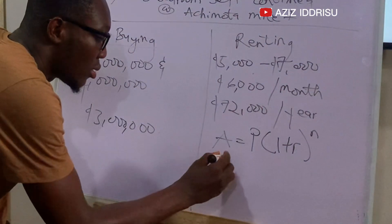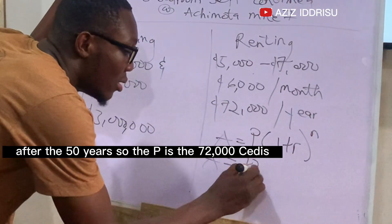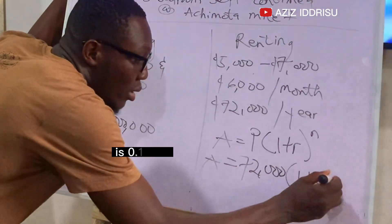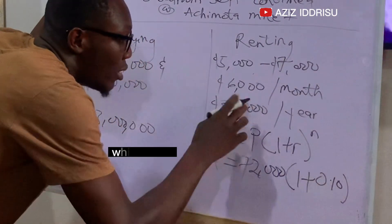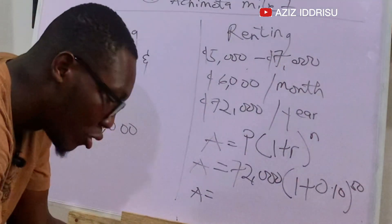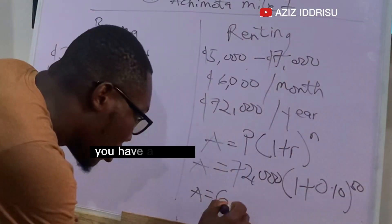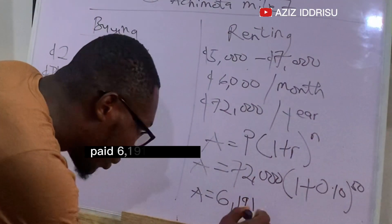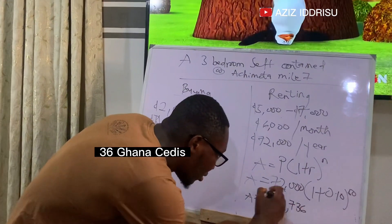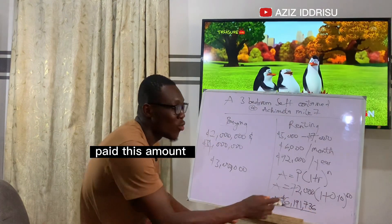Here our initial payment P is seventy-two thousand cedis — that is the amount you would have paid after the fifty years. When you do your calculations, you realize that you have already paid six million, one hundred and ninety-one thousand, seven hundred and thirty-six Ghana cedis.